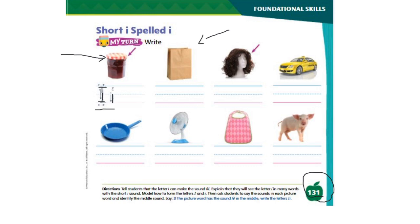Let's take a look at this picture. Do you know what this is? Bag. B-A-G. Bag. If you hear the short I sound in bag, you write it on the line. How about this? Wig. W-I-G. Wig. How about this one? Cab. C-A-B. Cab. How about this one? Pan. F-A-N. Pan. This one? Fan. F-A-N. Fan. How about this one? Bib. B-I-B. B-I-B. And the last picture. Pig. P-I-G. So, you write the letter I under the pictures that you hear the sound I in.